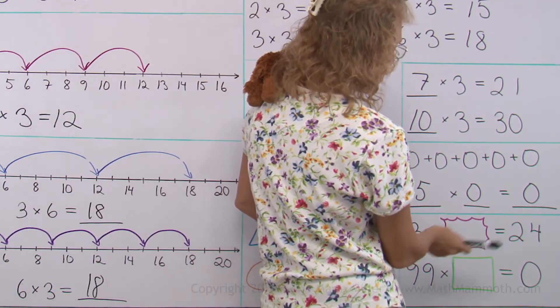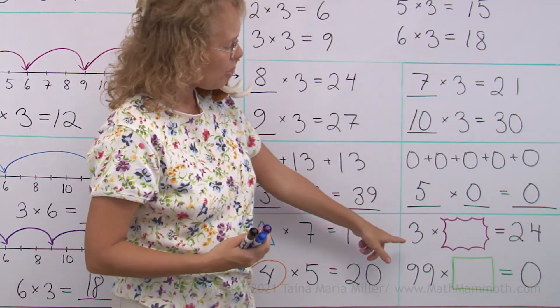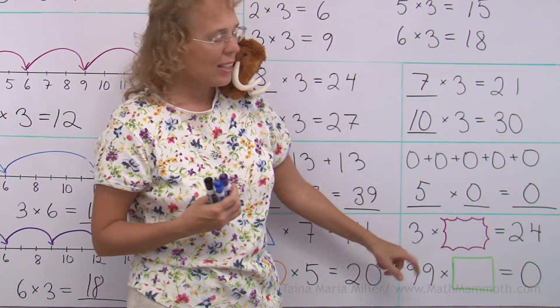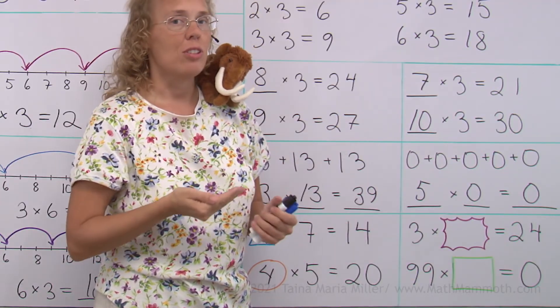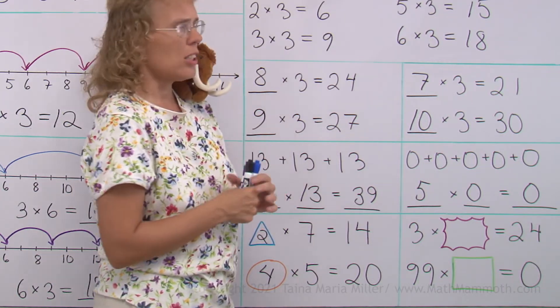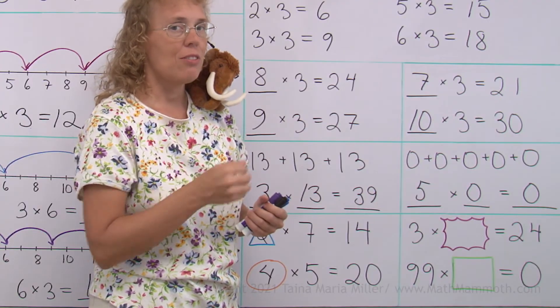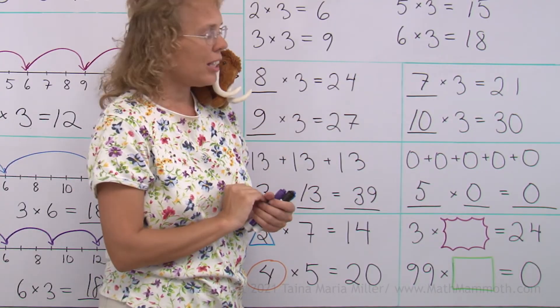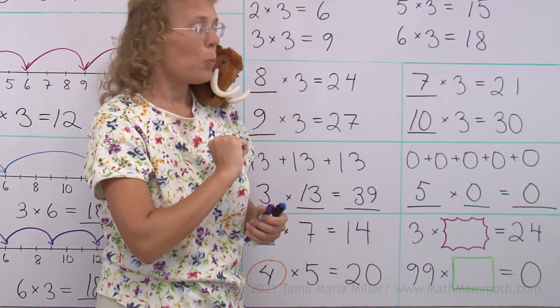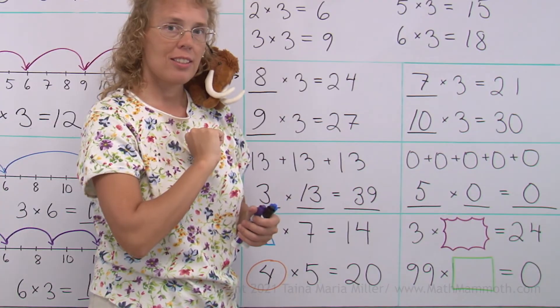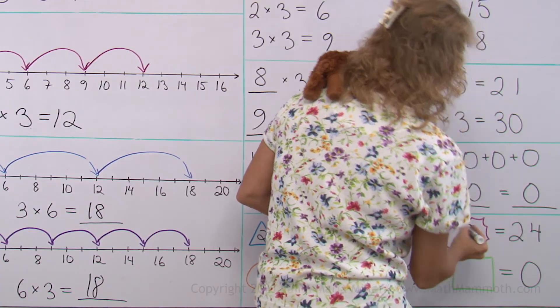Three times what number equals twenty-four? You could think of you have three groups. And how many dots do you need to put in each group so that you'll have twenty-four in total? Surely four dots is not enough. Five dots is not enough, right? If you have five and five and five, that's fifteen. How about six dots? Six and six and six? No. Seven dots? Eight dots? Eight is the answer. Eight and eight and eight makes twenty-four.